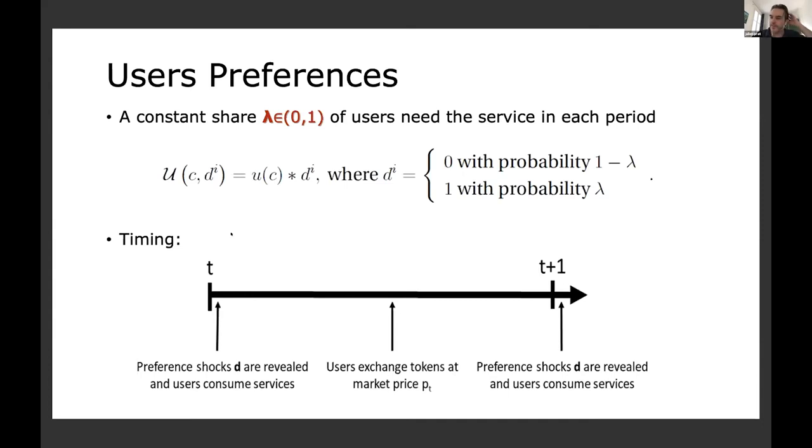Now, what is the timing? Here comes the token in advance aspect of the model. At the beginning of the period, your shock D is revealed. So at the beginning of the period, you know whether you want to use the platform or not. Let's say you have a smart contract on Ethereum and you realize that you're in a state of the world where you want to execute that smart contract. Then at the middle of the period, the financial market opens and you exchange tokens. And then at T+1, you start again. Now, the key thing is that at the beginning of the period, when the shock is revealed, if you don't have tokens, you cannot use the service. So that's what we call the token in advance constraint. The only way you can use the service is if in the middle of the previous period, you bought some tokens and you carry them over to the next period and you have some reserves. It's an assumption, it's a strong assumption, but economists know this. We are used to using that trick to justify why people hold money.